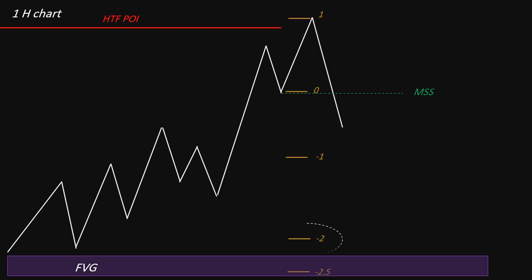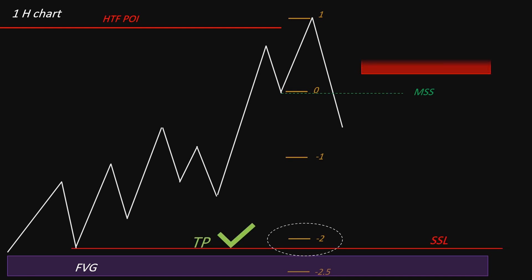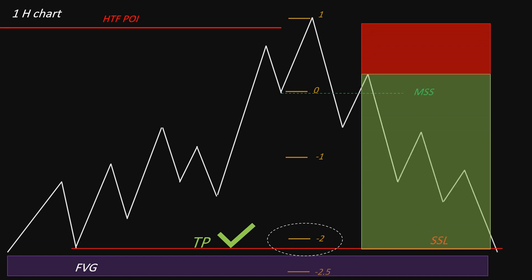Now wait for a market structure shift on the one-hour chart. Once that shift occurs, use your Fibonacci tool from the high to the low and check the -2 level. If there's a low just below the -2 level, that becomes your target instead of the fair value gap. If there's no lower high and only the fair value gap as your original target, that will be your take profit. If the liquidity level or higher low is above the -2 projection and there's nothing below, your target will be the internal fair value gap. This strategy is straightforward: establish your bias, wait for confirmation with a market structure shift on the lower time frame, and set your take profit levels.